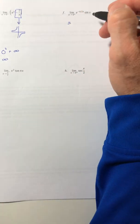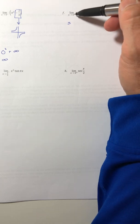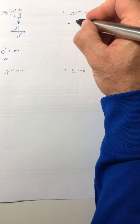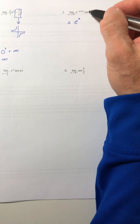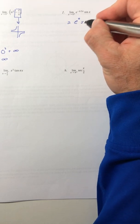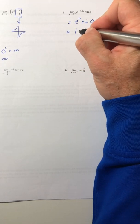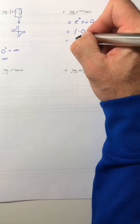All right, part F. If you plugged in zero into your exponent, you get e to the zero. And if you plugged zero in for sine, you'd have sine of zero. Well, that's just one times zero, which is zero.